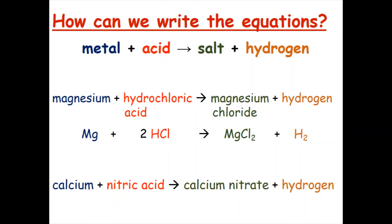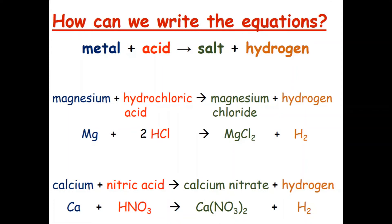Again we are going to transform this into the symbol equation. The symbol for calcium is Ca. The formula for nitric acid is HNO₃. This reacts to calcium nitrate, the formula is Ca(NO₃)₂, plus H₂ for hydrogen. Again, to balance this equation, we just have to put a 2 in front of the nitric acid.